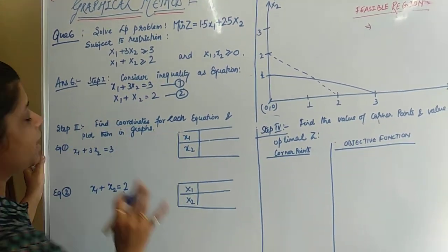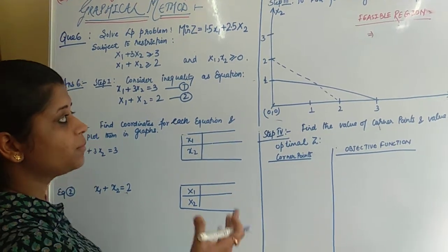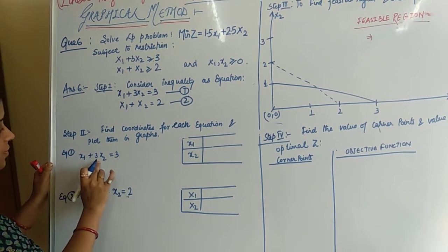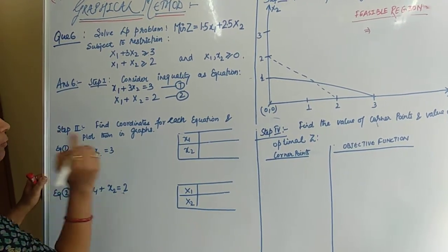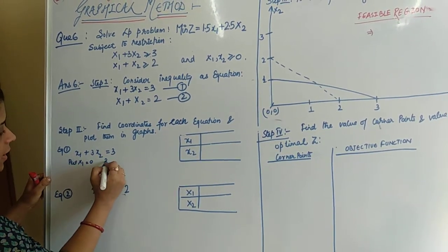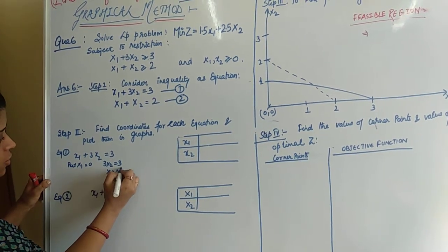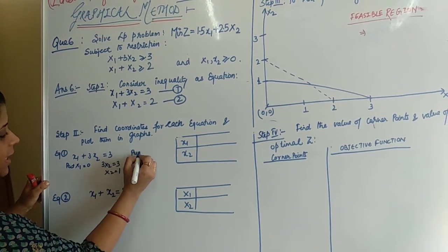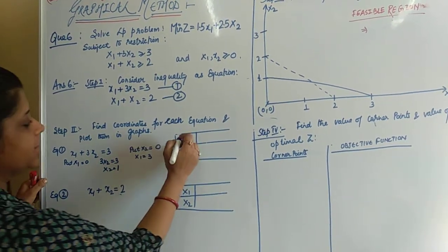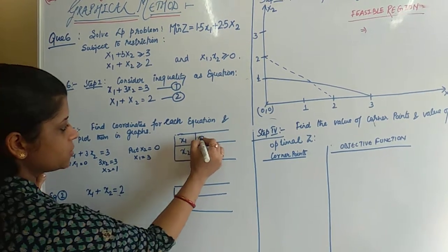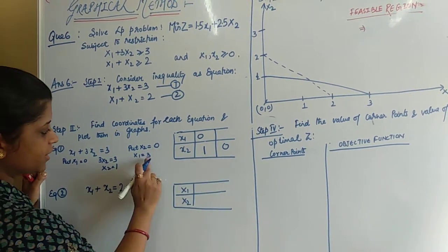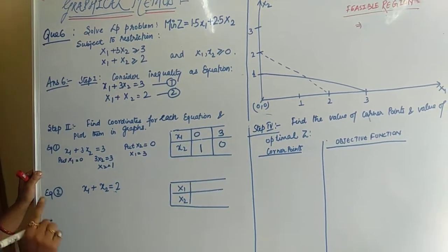In step number 2, we have to find the coordinates of each equation so that we can plot these lines on the graph. For equation 1, x1 plus 3x2 equals 3: put x1 equals 0, we get 3x2 equals 3, so x2 equals 1. Put x2 equals 0, we get x1 equals 3. So the coordinates are (0, 1) and (3, 0).